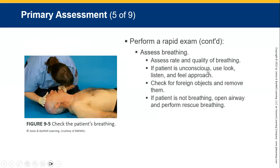When assessing breathing rate, always look, listen, and feel. Look to see if the chest wall is moving up and down — one up and one down is one breath. Calculate the breathing rate by counting breaths in 15 seconds and multiplying by four, or counting in 30 seconds and multiplying by two. Look to see if you can see anything in the patient's mouth. If the patient is not breathing, open the airway and perform rescue breathing.